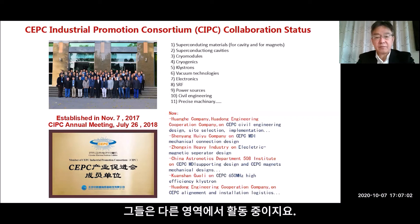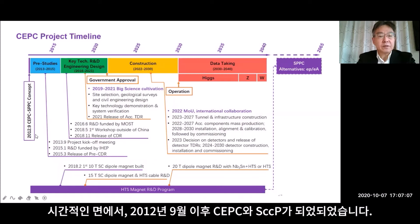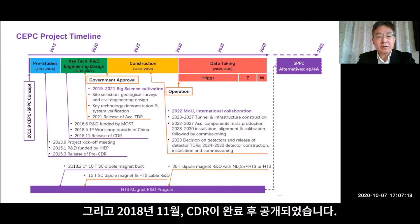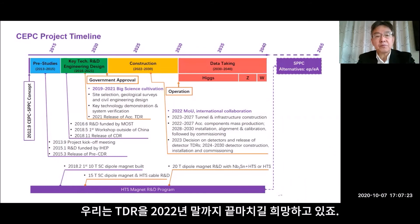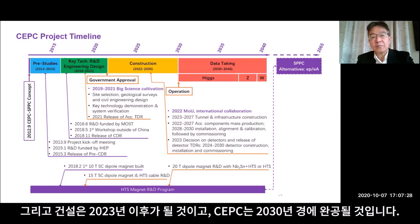CEPC needs industry to participate and collaborate during construction. We have established the so-called CEPC Industrial Promotion Consortium (CIPC) collaboration, working on different domains. Regarding the timescale: since September 2012 CEPC and SPPC were proposed, and in November 2018 the CDR was completed and released. We are now in the TDR phase, hoping to finish the TDR by the end of 2022.